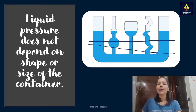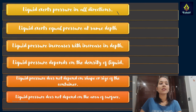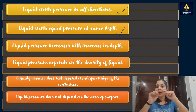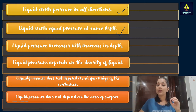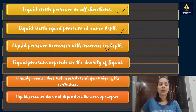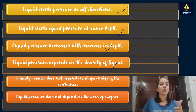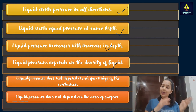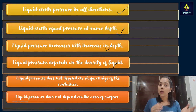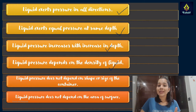Let's see what we have concluded so far. Liquid exerts pressure in all directions — shown by the balloon experiment. It exerts equal pressure at the same depth — confirmed when the manometer placed at a certain depth showed the same reading. Liquid pressure increases with increase in depth. Liquid pressure depends on the density of the liquid: honey has greater density so it has greater pressure; gasoline and cooking oil have less density than water so their pressure is lower.